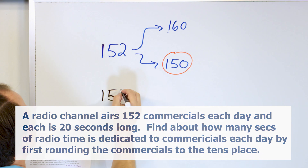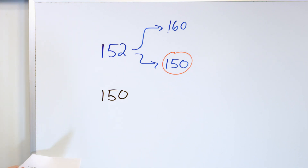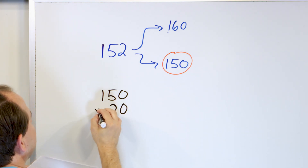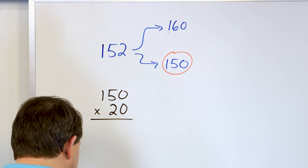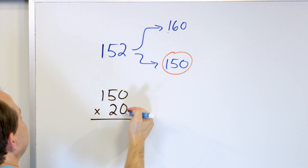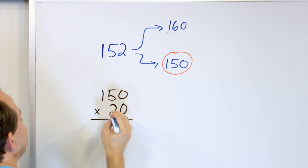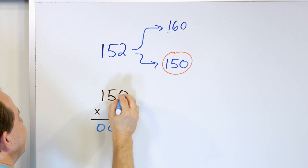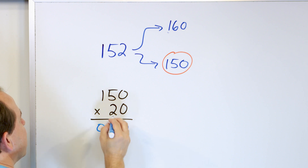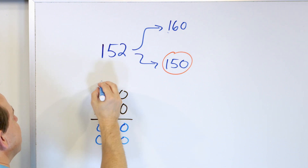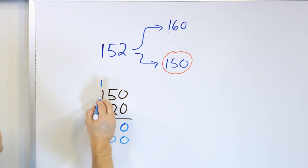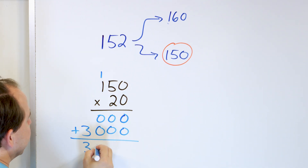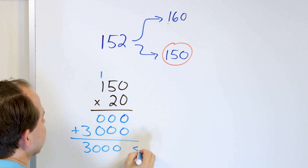So we take 150, even though we know it's not quite right — it's an estimate. We have 150 commercials and 20 seconds apiece, so we're going to multiply times 20. Zero times zero is zero, zero times five is zero, zero times one is zero. Drop a zero. Two times zero is zero, two times five is 10 — that's a zero, carry one. Two times one is two, one more is three. And then I add, and you can see I'm just going to get 3000 seconds.